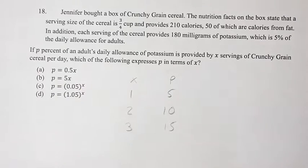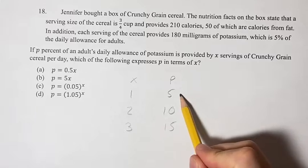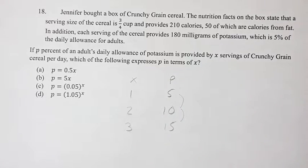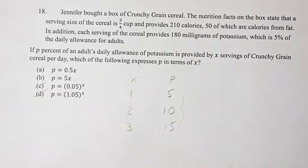So which of these is this represented by? Well, we can see that it's going up by the same amount every time. There's a constant rate of change, so therefore it's a linear equation. So c and d are out of the picture.